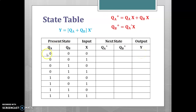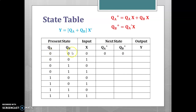For the first row, QA = 0, QB = 0, X = 0: QA+ = QA·X + QB·X = 0·0 + 0·0 = 0. QB+ = QA-bar · X = 1·0 = 0. Output Y = (QA + QB)·X-bar = 0·1 = 0. Similarly, using the three equations, fill all remaining rows of the state table.